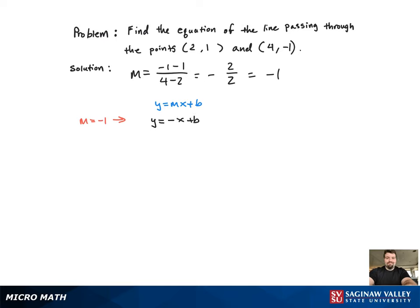Now we just need b. So we're going to plug in one of the points, arbitrarily using 2 comma 1, and solve for b. So we get b equals 3.